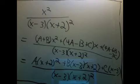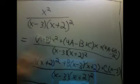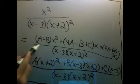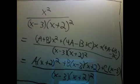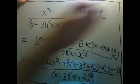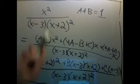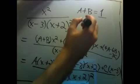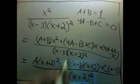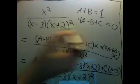And just as in the previous problem, in order for this to be true, the numerator here has to equal the numerator there. And the only way that can happen is if a plus b is 1, because that's the coefficient of x squared. And we need 4a minus b plus c to be 0, because there's no x term here. And there's no constant term, so we need 4a minus 6b minus 3c to be 0.